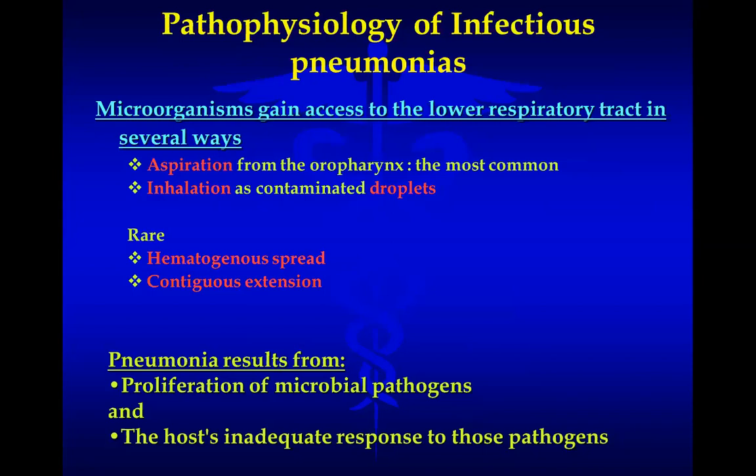The pathophysiology of infectious pneumonia: microorganisms gain access to the lower respiratory tract in several ways. The most common route is aspiration from the oropharynx, which can be micro-aspiration. Less commonly, inhalation from contaminated droplets can occur. Rarely, hematogenous spread or contiguous extension from an infectious focus can also lead to pneumonia. Pneumonia results from proliferation of microbial pathogens that gained access to the lower respiratory tract, combined with an inadequate host response to those pathogens.